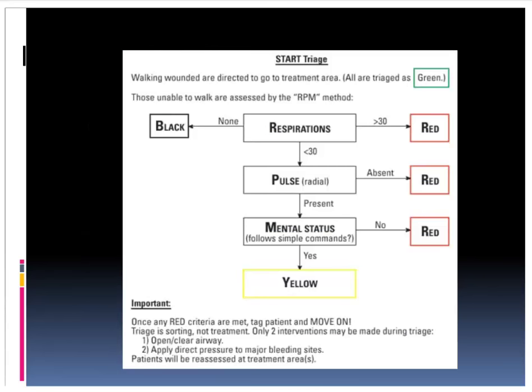Here's a good algorithm for START triage. Anyone who walks goes automatically to the casualty collection point as green. Patients who didn't walk: assess respirations. Not breathing — reposition airway one time; child below eight years old — 30 seconds rescue breathing; starts breathing — red tag; still not breathing — gray tag. If breathing adequately below 30 per minute, check perfusion: pulse at wrist for adult, capillary refill for child under eight. Present — move to mental status; not present — red tag. Mental status: follows simple commands or acts appropriate for age — yellow tag; does not — red tag.